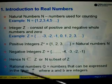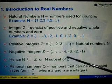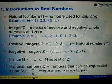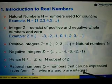Okay, then we go next to rational numbers. Rational numbers denoted by the symbol Q. And these are the numbers that can be expressed in the form of A over B, where A and B are integers.